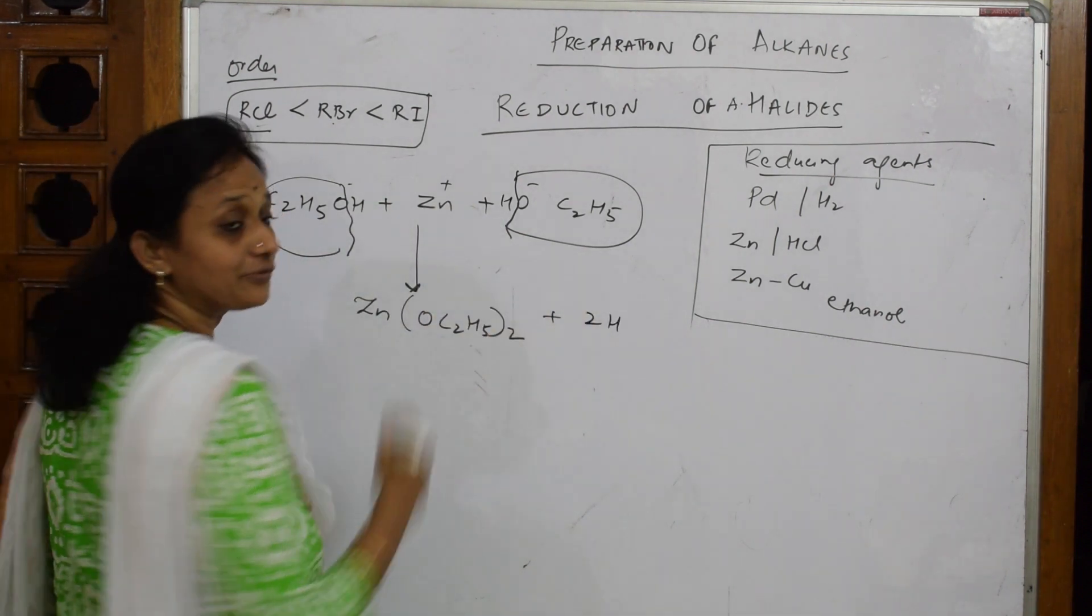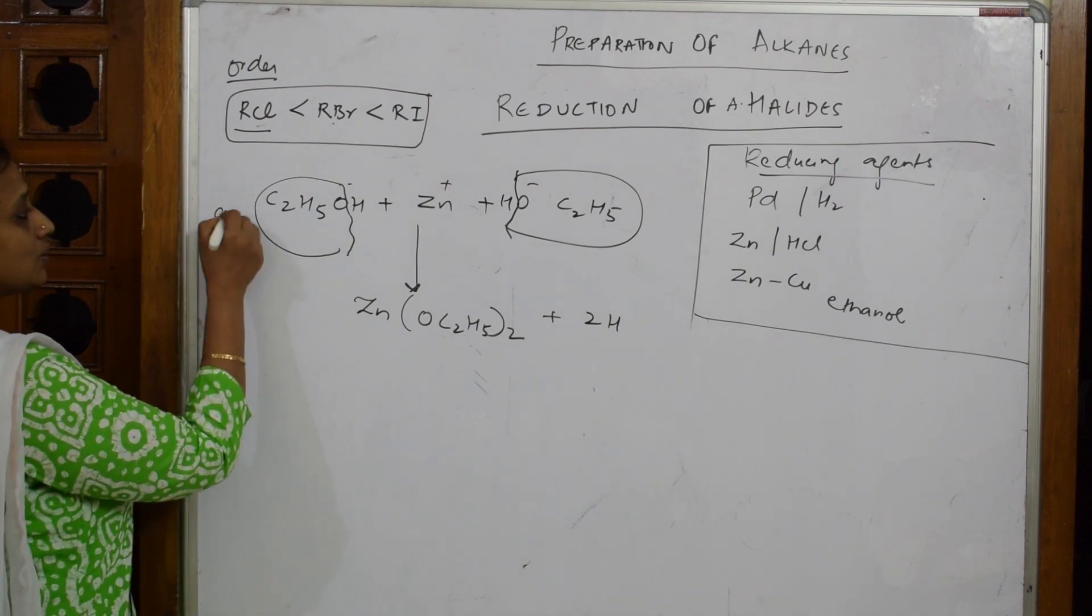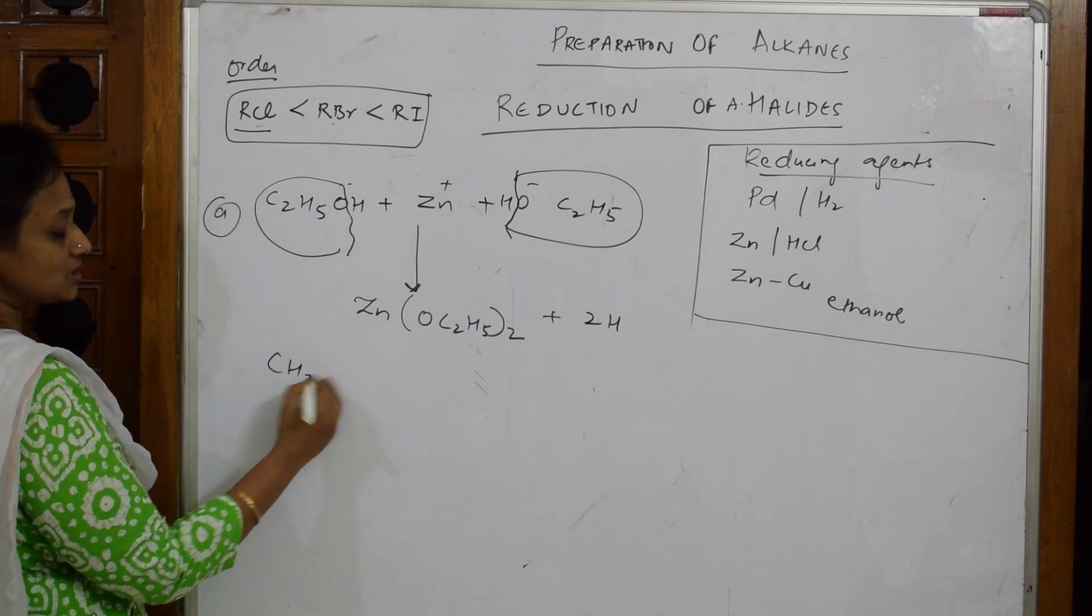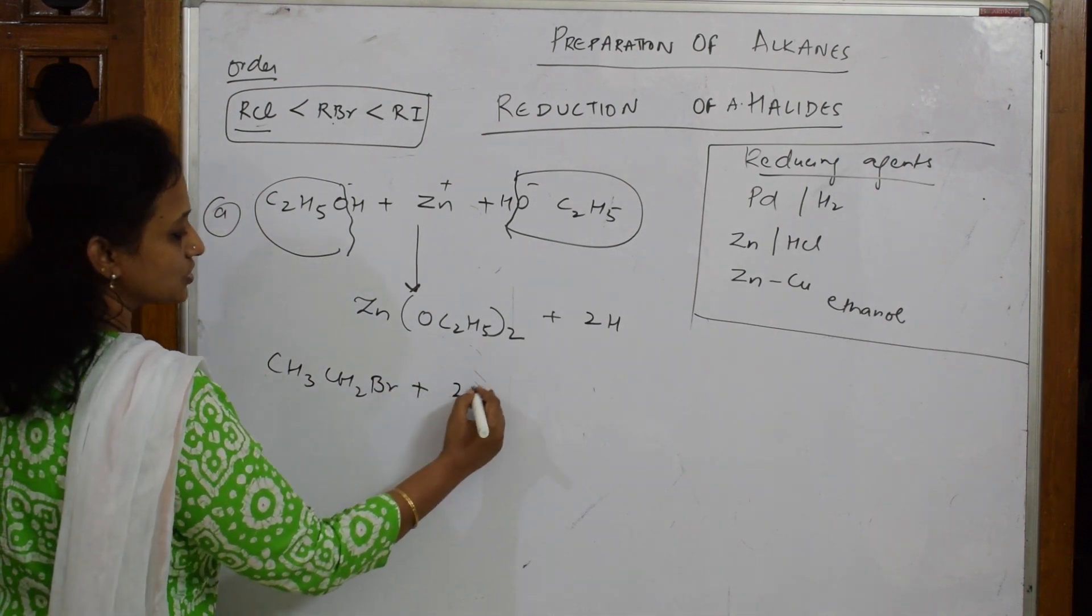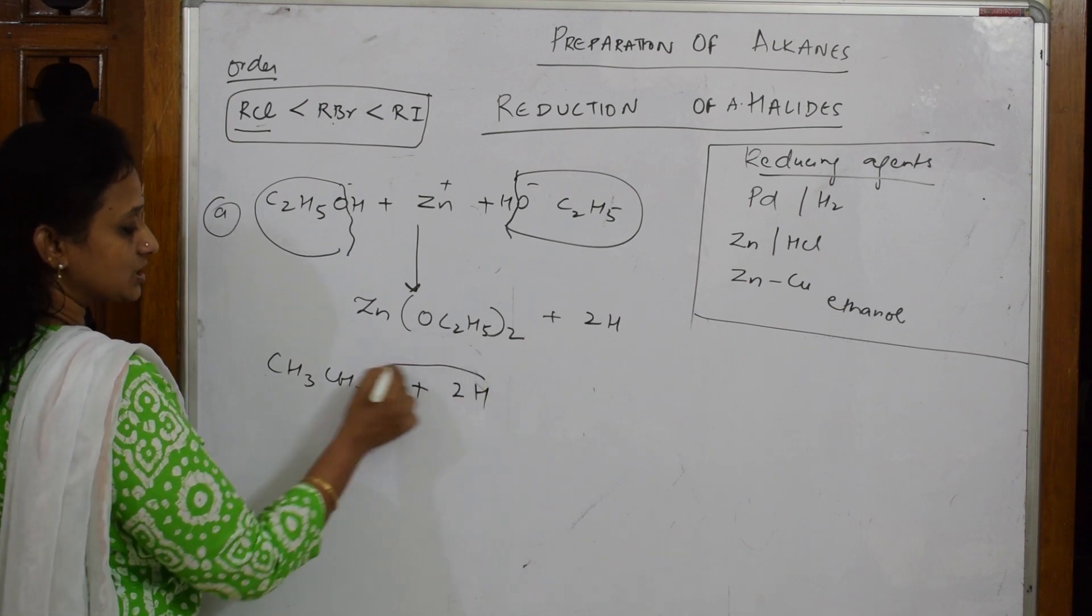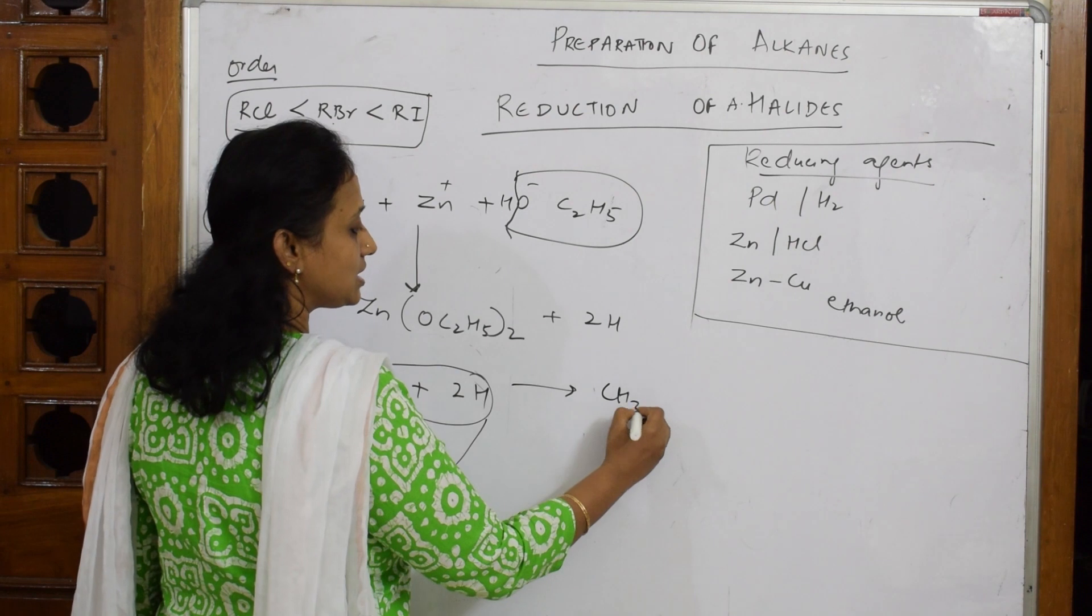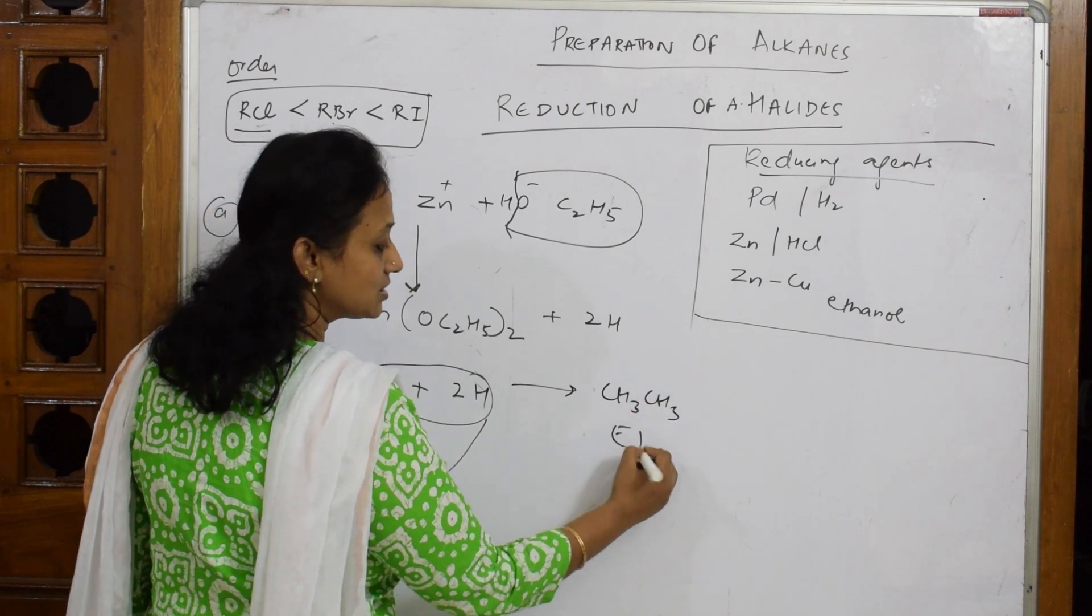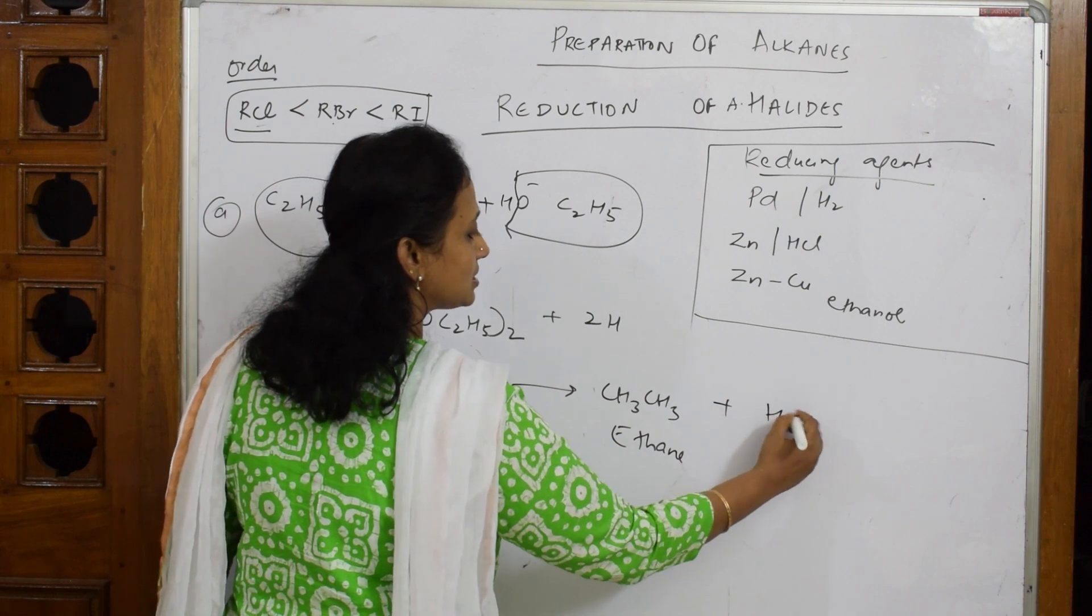Take an example - simple, according to the order: CH₃CH₂Br plus two hydrogens. What will happen? One hydrogen comes out with this Br and the other hydrogen adds here. This becomes CH₃CH₃, that is ethane, and what is left out? Your HBr is left out, same as earlier.